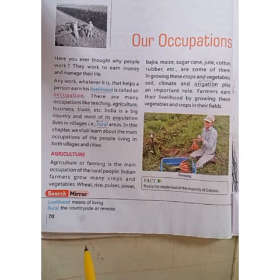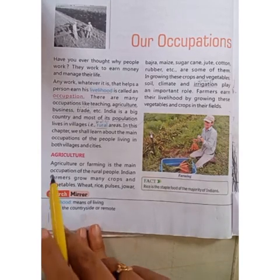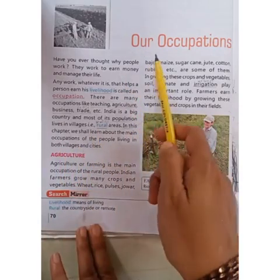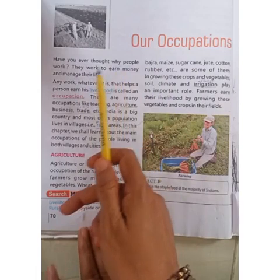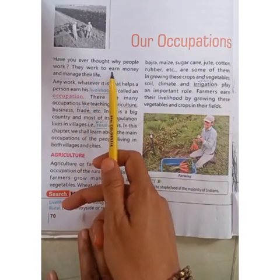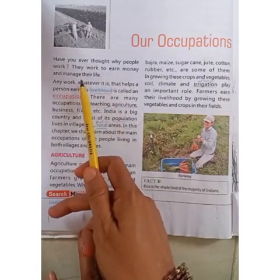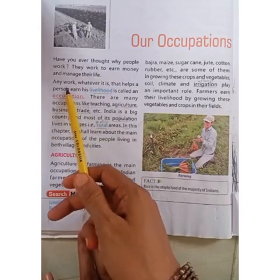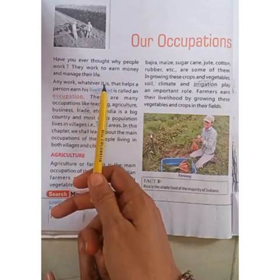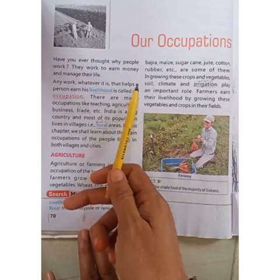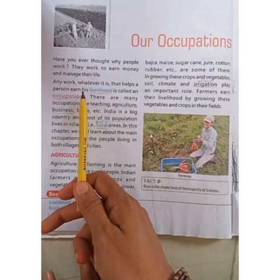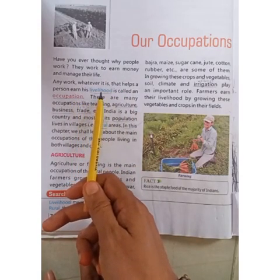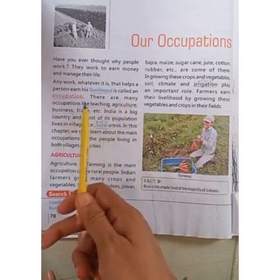Now we are going to start our chapter number 10 reading. Chapter number 10: Occupations. Have you ever thought why people work? They work to earn money and manage their life. Any work, whatever it is, that helps a person earn his livelihood to earn money — this is called an occupation.